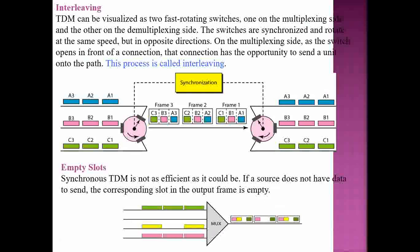What about empty slots? In synchronous TDM, which is not as efficient as it could be: if a source does not have data to send, the corresponding slot in the output frame is empty. These empty slots are not left blank — they are given empty data, similar to how spaces between characters in computing are still counted.